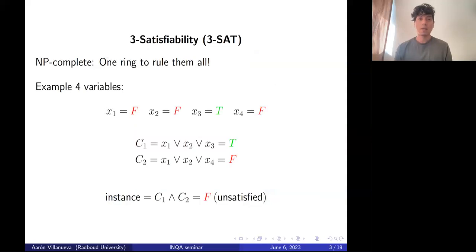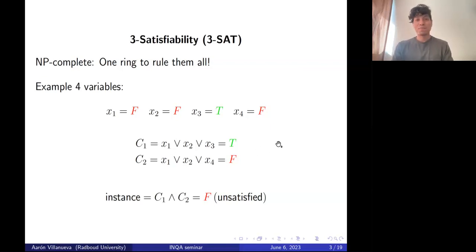The last example is Three-Satisfiability, or 3-SAT, which is NP-complete — meaning one ring to rule them all. If you have an efficient algorithm for solving this problem, you will immediately solve any other hard optimization problem as well.